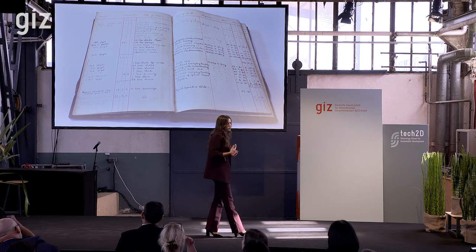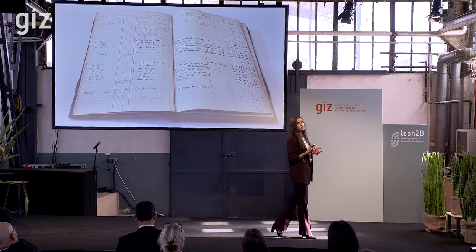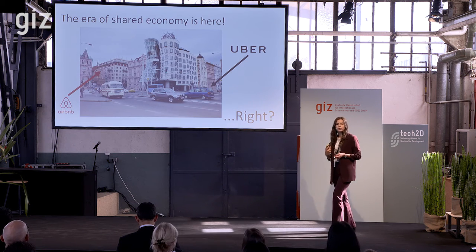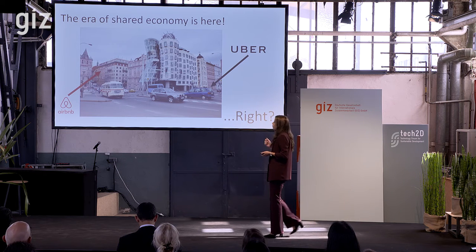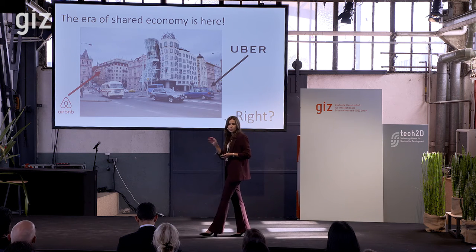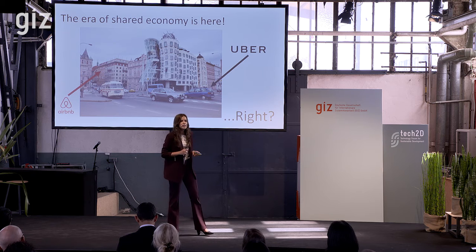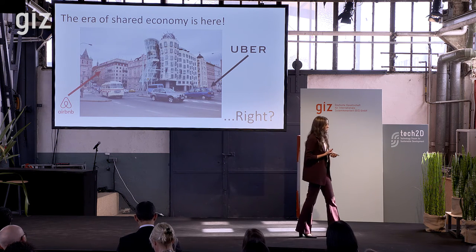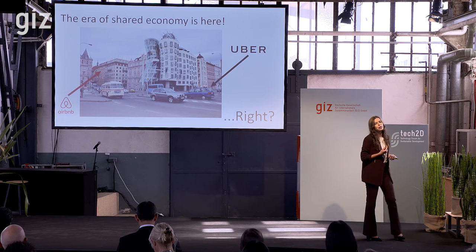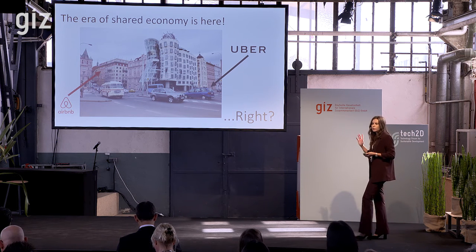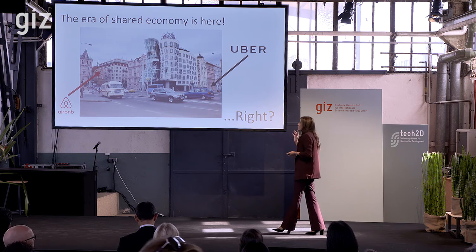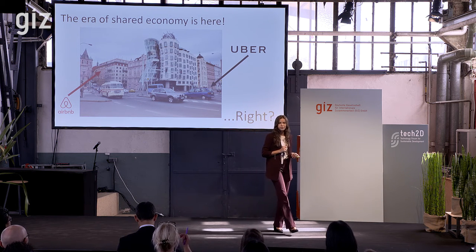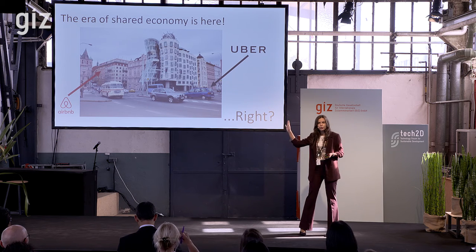What if we could shift our trust away from central entities towards the communities? We are already doing that — we have all these cool platforms allowing us to connect with one another. Airbnb and Uber, to name just the most famous ones. It seems like we are already living in the era of shared economy, and these platforms allow us to meet each other's needs without going through central entities. But nothing about the world we live in is truly shared. This economy is not peer-to-peer. This is still peer to Uber to peer.